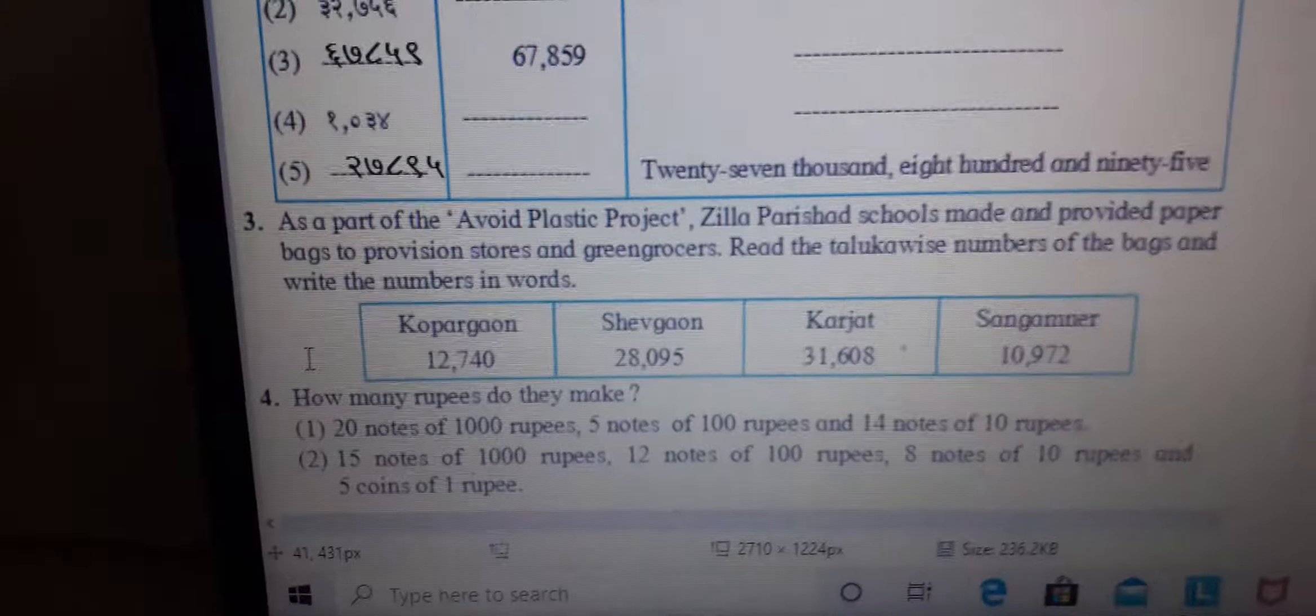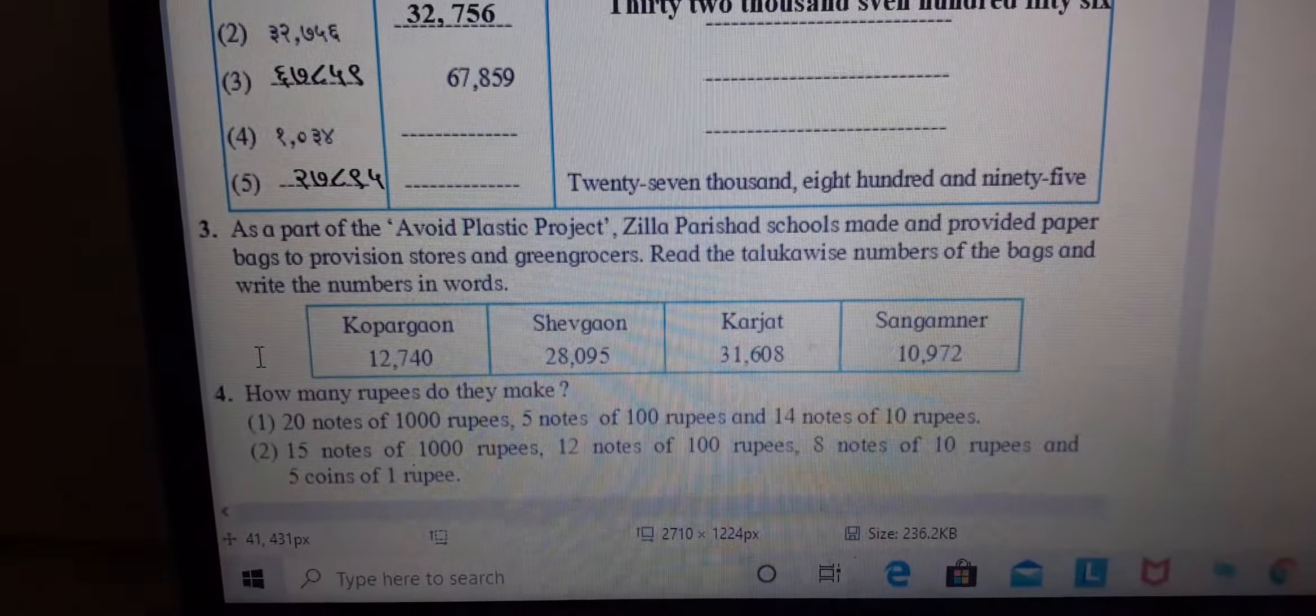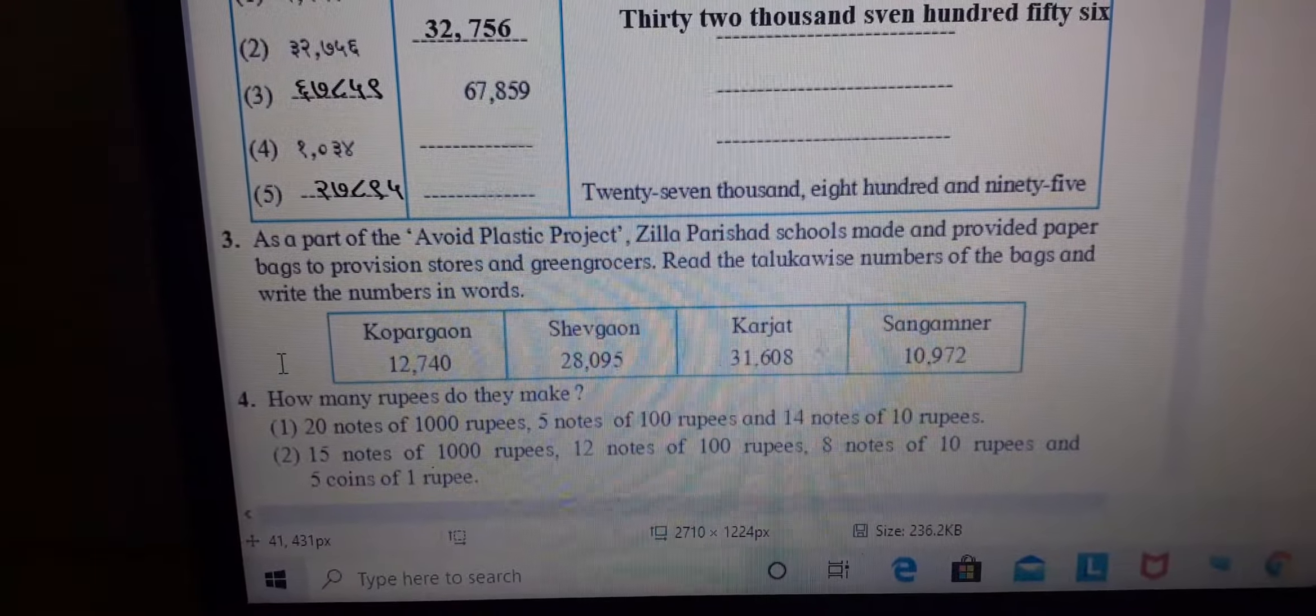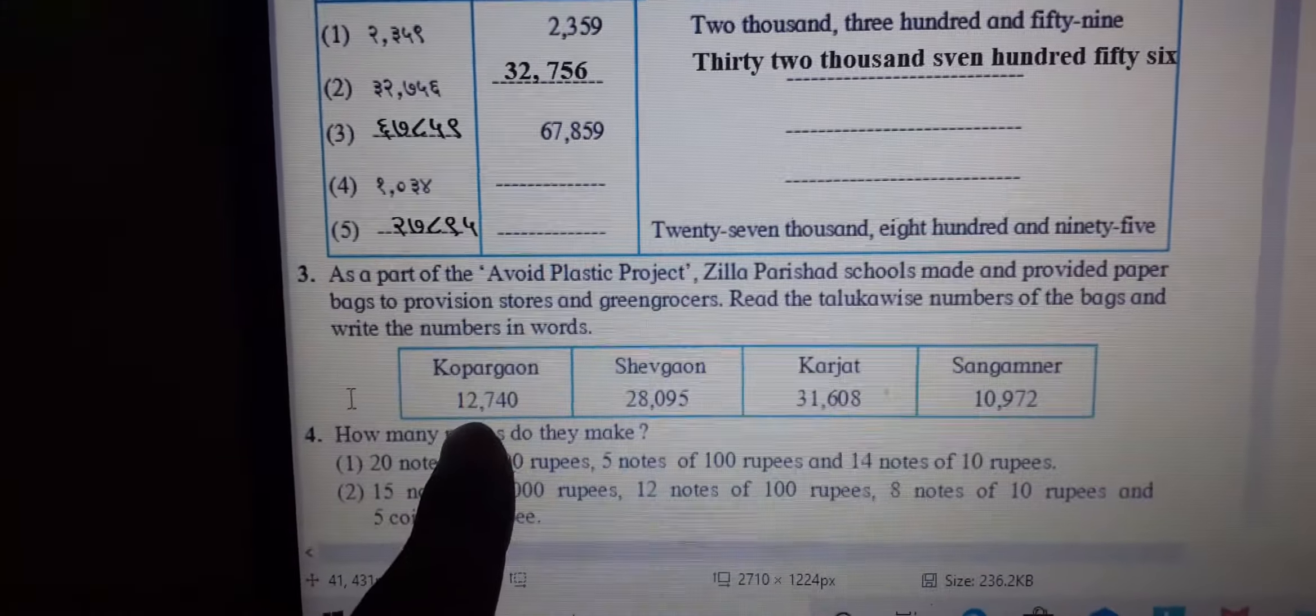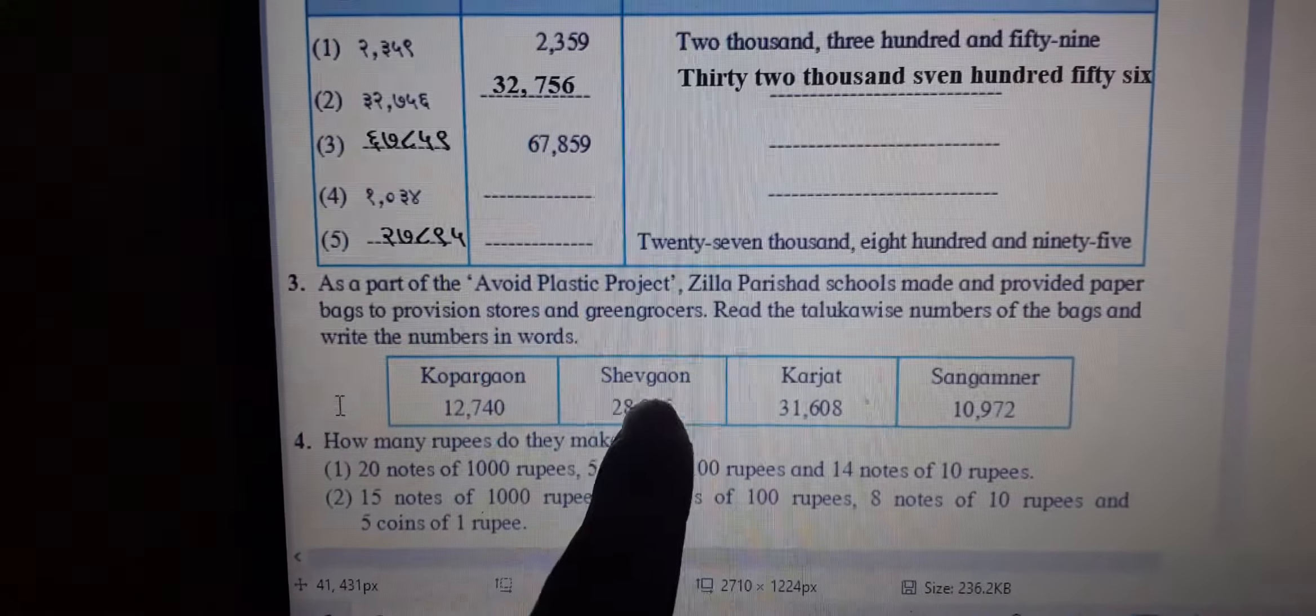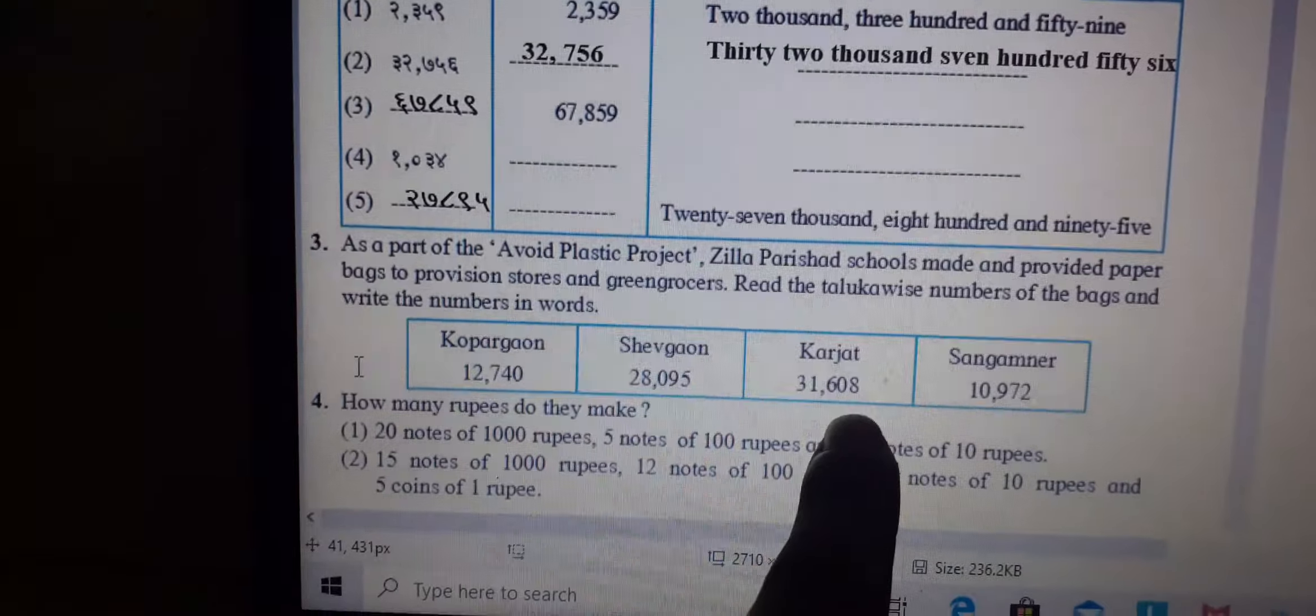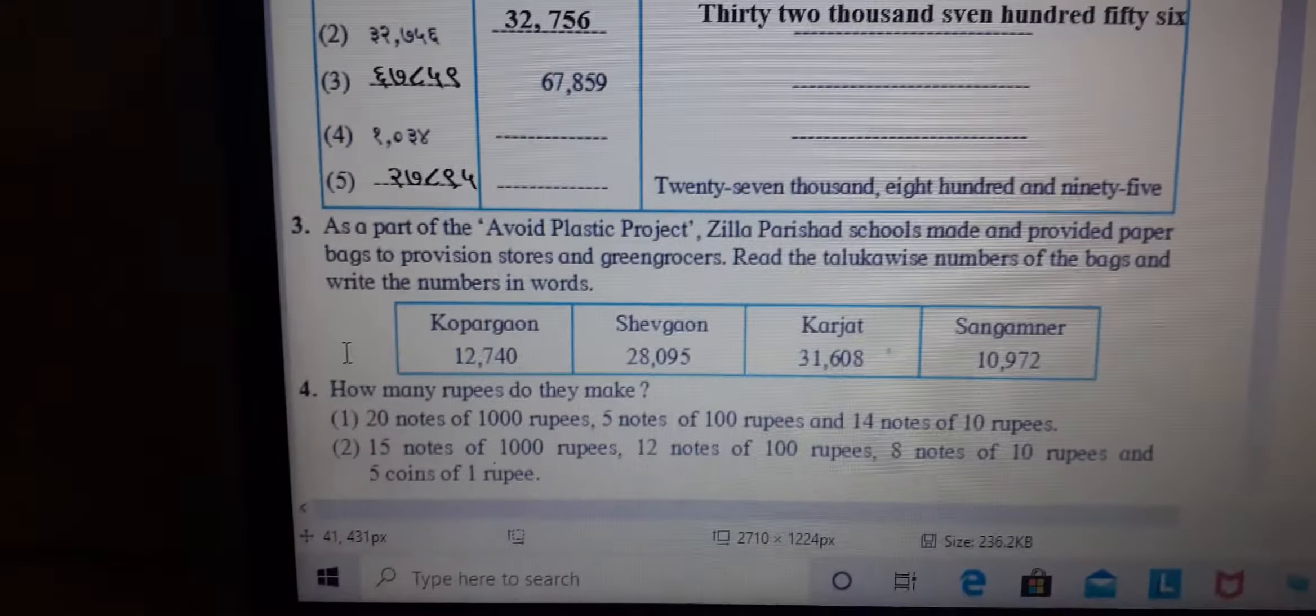Next question. Third number question. As a part of avoid plastic project, Jila Parisi the school made and provided paper bags to provision store and green grocers. Read the talukawise number of bags and write the numbers in each words. The numbers have 2,714. As it is 29525, only spellings you have to write in the third question.